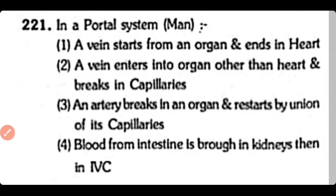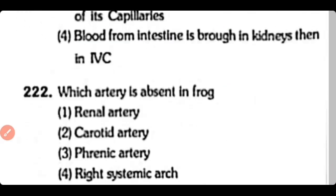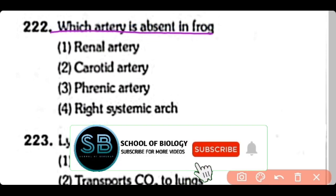Q221. In a portal system, a vein starts from an organ and ends in the heart — Option 1; or a vein enters an organ other than the heart and breaks up into capillaries — Option 2. The correct answer is Option 2: a vein enters another organ (except the heart) and then breaks up into capillaries there.